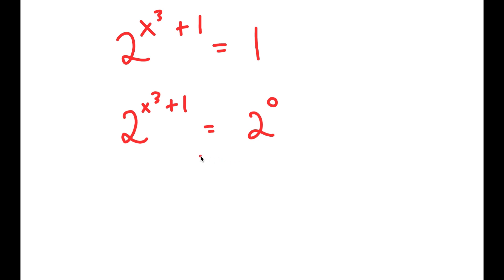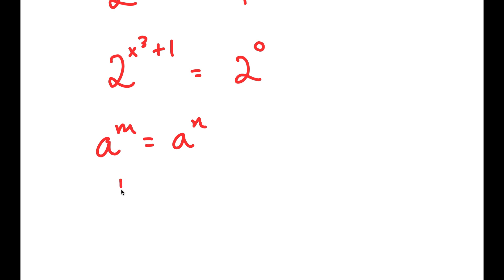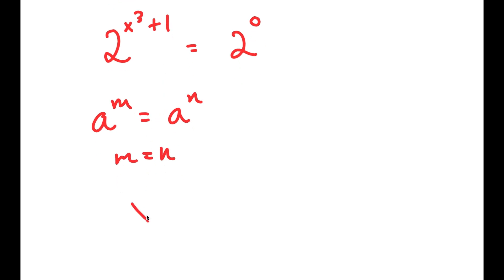Using the exponent property that if a to the power of m equals a to the power of n, then m equals n, I get x to the power of 3 plus 1 is equal to 0.